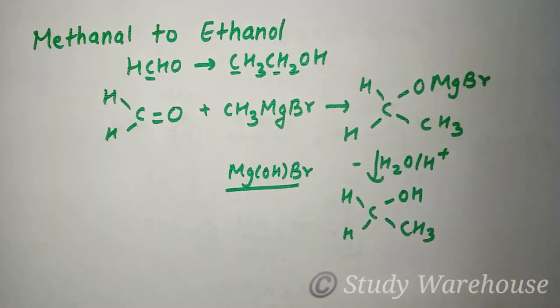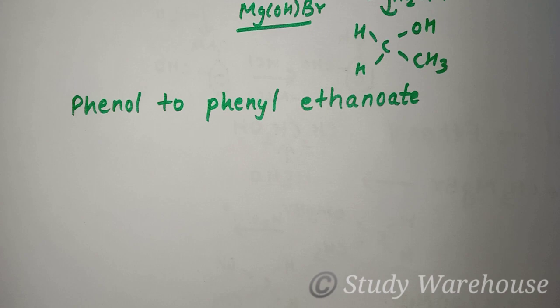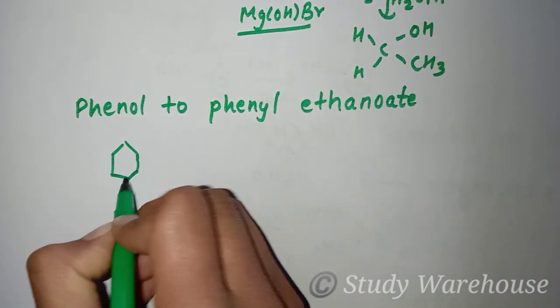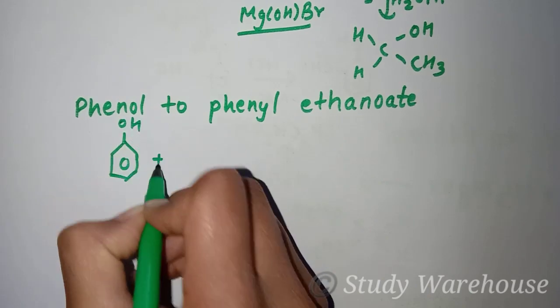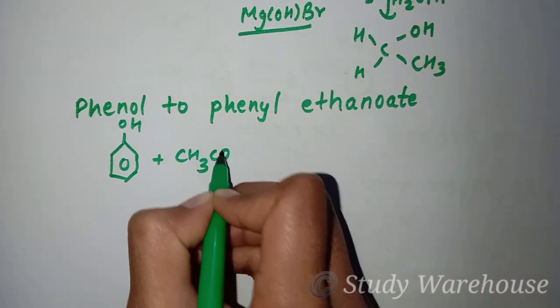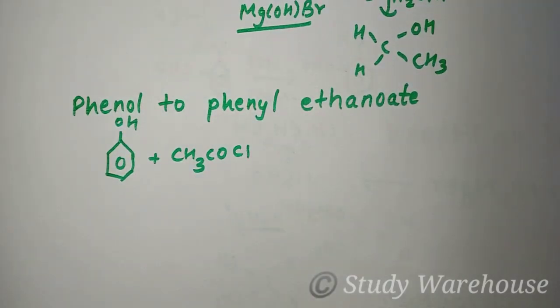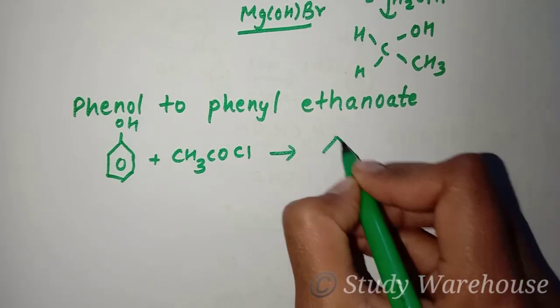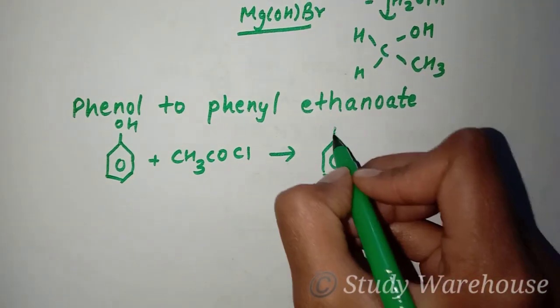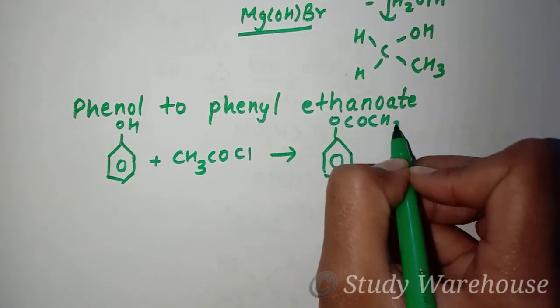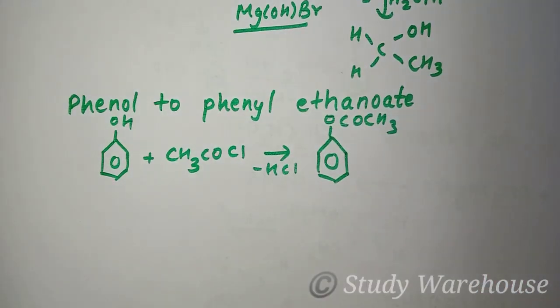After that you have to change phenol. This is very simple. First you have to write phenol and then CH3COCl, which is acetyl chloride or ethanoyl chloride. Here direct you will get phenyl OCOCH3 and HCl, or you can also write phenyl ethanoate.